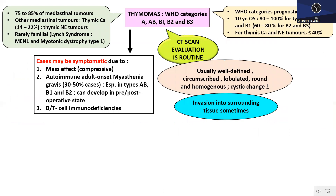Thymomas account for around 80% of all mediastinal tumors, with thymic carcinomas comprising around 20%, and thymic neuroendocrine tumors being even rarer. Thymomas are usually sporadic but can be familial in Lynch syndrome or MEN1. The WHO histotype category has prognostic relevance: type A, AB, and B1 have good prognosis with 10-year overall survival of 80–100%, while B2 and B3 have 10-year survival of 60–80%, and thymic carcinoma/neuroendocrine tumors have even worse prognosis.